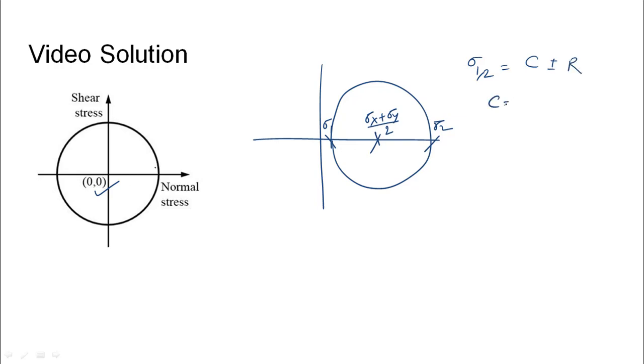Sigma 1 and 2 are given as the center coordinate plus minus the radius of this circle, where the center is given as Sigma x plus Sigma y by 2, and radius is given as square root of Sigma x minus Sigma y by 2 squared plus tau xy squared. So the center of the Mohr's circle is given as Sigma x plus Sigma y by 2.